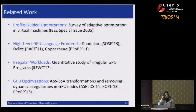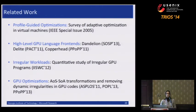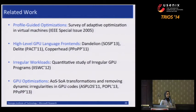GPU optimizations like the data layout transformation have also been studied extensively. Our contribution isn't to say this optimization is always good for the GPU — we know it is in some cases. It's really to show that despite that, there's input dependence and dynamic behavior. How can we judge whether an optimization is good or not? That's what the profiling framework is trying to address.